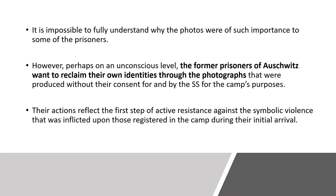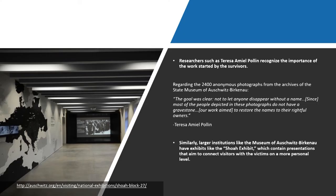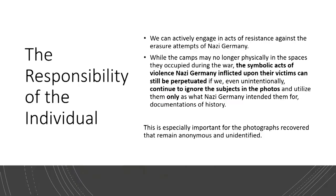What is being done nowadays? We have researchers and teams such as Teresa Emil Polin, who recognize the importance of this work initially started by survivors. There are actually 2,400 anonymous photographs in the archives of the State Museum of Auschwitz-Birkenau. Researchers like Teresa stated that the goal was clear: to not let anyone disappear without a name. Most of the people depicted in these photographs do not have a gravestone, so their work aims to restore a name to its rightful owner. I actually had the privilege of speaking with Teresa and having dinner with her and her family — they're absolutely lovely folk. Institutions like the Museum of Auschwitz-Birkenau now have exhibits like the Shoah exhibit, which contains presentations that aim to connect visitors with the victims on a more personal level.